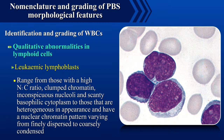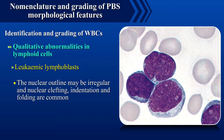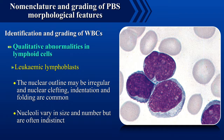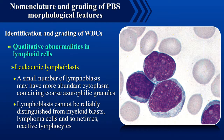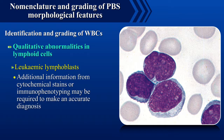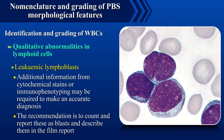Leukemic lymphoblasts range from those with a high N:C ratio, clumped chromatin, inconspicuous nucleoli, and scanty basophilic cytoplasm, to those that are heterogeneous in appearance with nuclear chromatin varying from finely dispersed to coarsely condensed. The nuclear outline may be irregular and nuclear clefting, indentation, and folding are common. Nucleoli vary in size and number but are often indistinct. A small number of lymphoblasts may have more abundant cytoplasm containing coarse azurophilic granules. Lymphoblasts cannot be reliably distinguished from myeloid blasts, lymphoma cells, and sometimes reactive lymphocytes; additional information from cytochemical stains or immunophenotyping may be required. The recommendation is to count and report these as blasts and describe them in the film report.